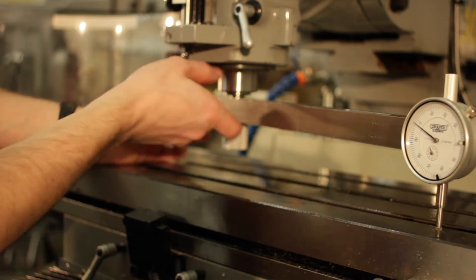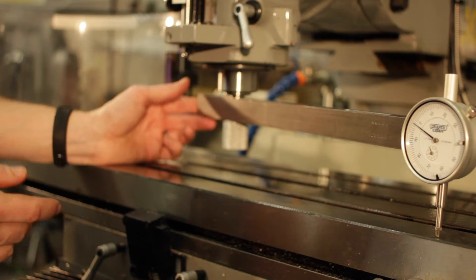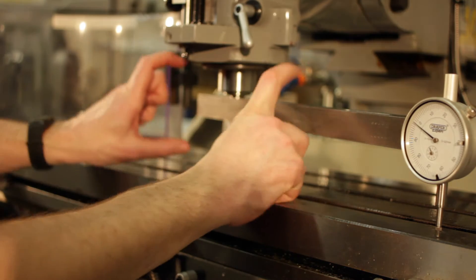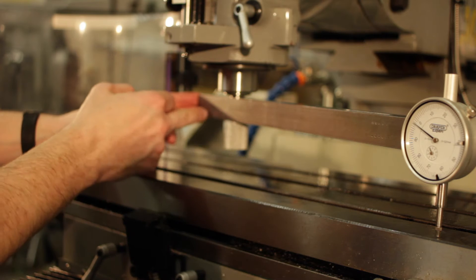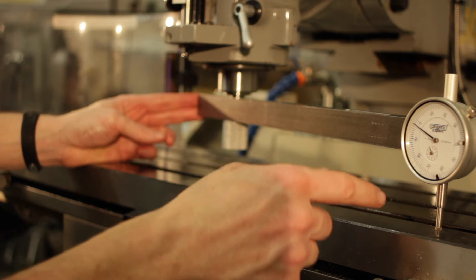To do this operation we're going to use this tramming bar. It's a custom made item, although you can purchase ones for this purpose. They tend to be a bit smaller and have two DTIs. This is a nice unit because not only is it adjustable, it's got a couple of slots on there, but also it's really long.